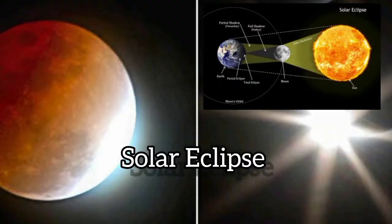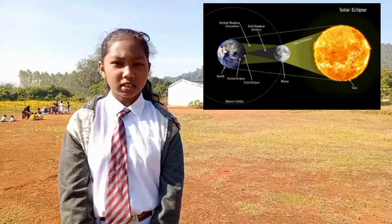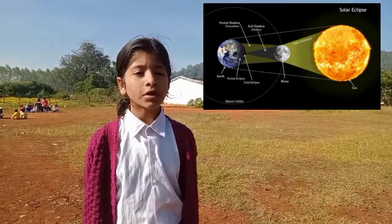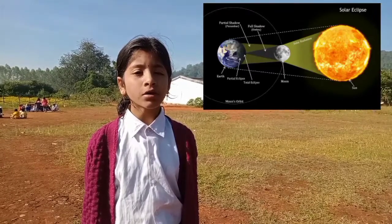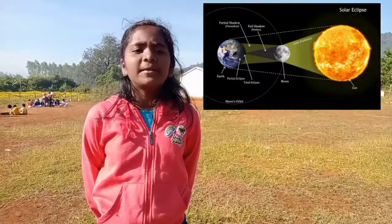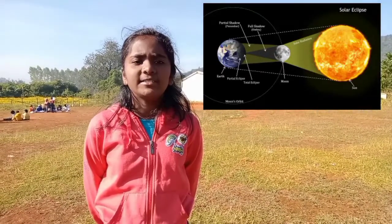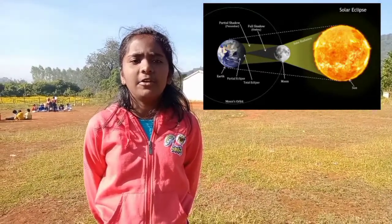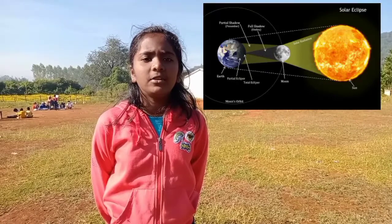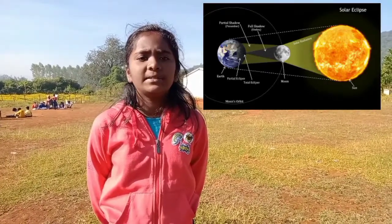When the moon comes in between the sun and earth, it casts its shadow on the surface of the earth, and partly and wholly blocks the sun. This is called a solar eclipse.